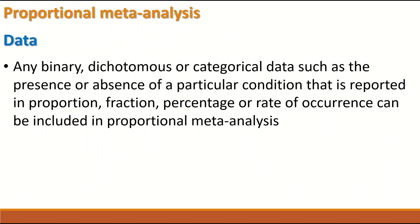The data for performing proportional meta-analysis can be any binary outcome, dichotomous, or categorical data — such as the presence or absence of a particular condition — that is reported in either a proportion, a fraction, a percentage, or a rate of occurrence. So the data can be proportion, fraction, percentage, or rates.